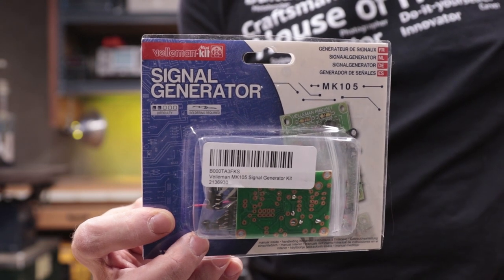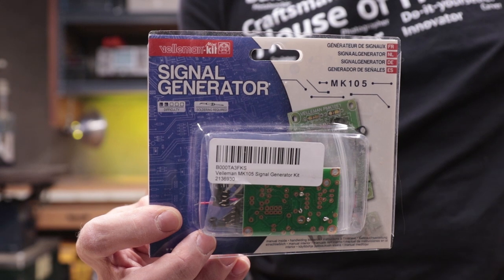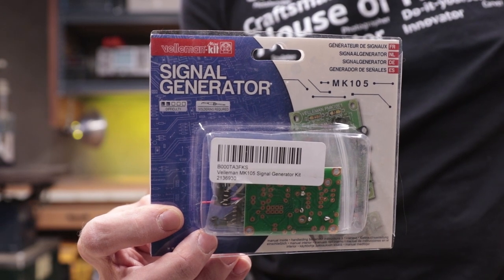This is a basic electronics kit made by Velman. It's a signal generator model number MK105 and we'll be assembling it and testing it today. It runs off a 9 volt battery and makes sine waves, triangle waves, and square waves at about a thousand hertz.